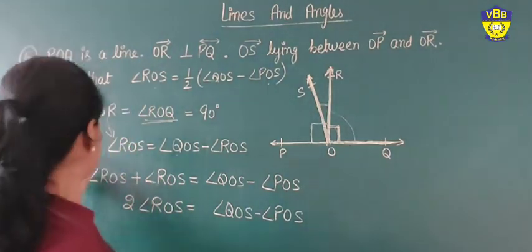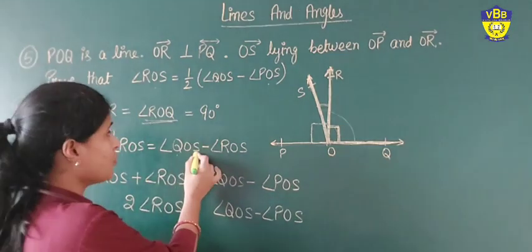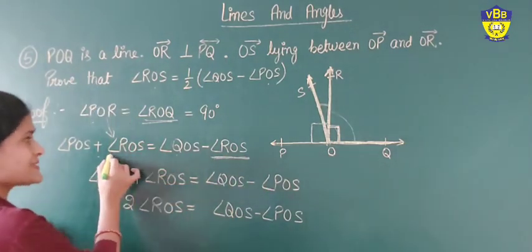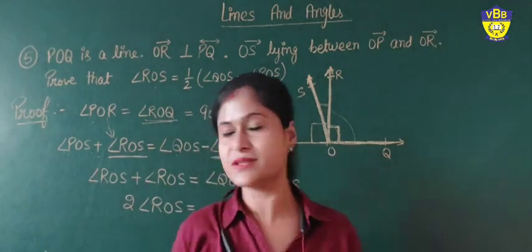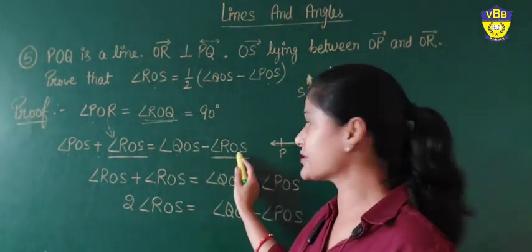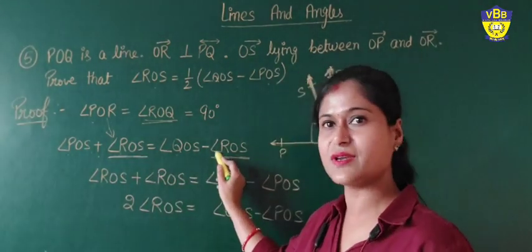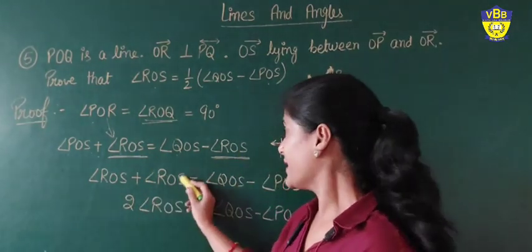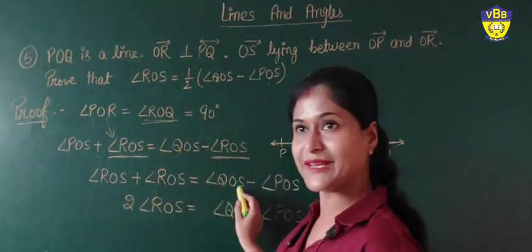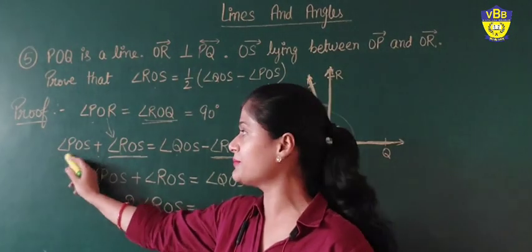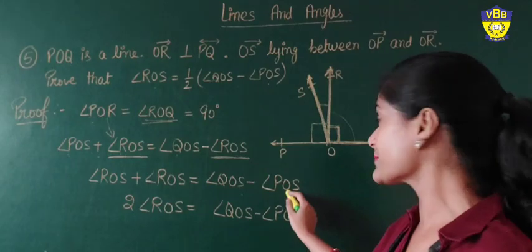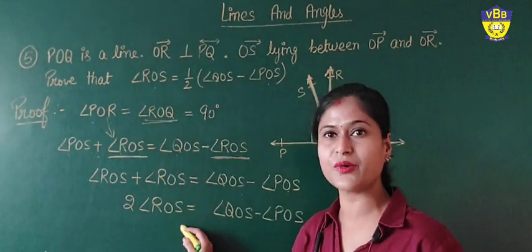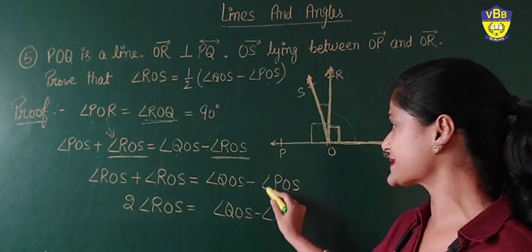Here, angle POS plus angle ROS is equal to angle QOS minus angle ROS. Now both sides have ROS. Transposing the ROS from the right side to the left side, the sign changes from minus to plus. So we get angle POS plus 2·ROS on the left. Transposing POS to the right gives a negative sign. So twice of angle ROS is equal to angle QOS minus angle POS.